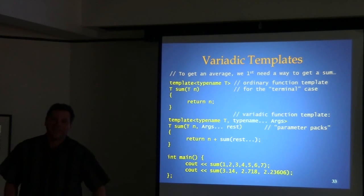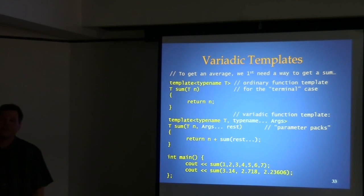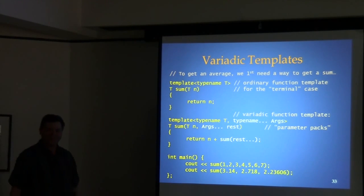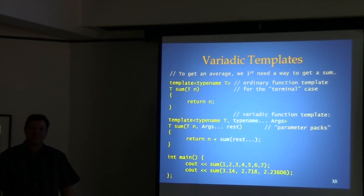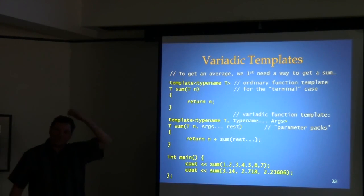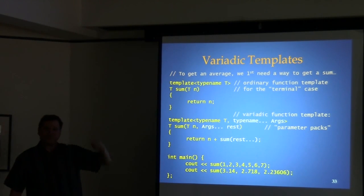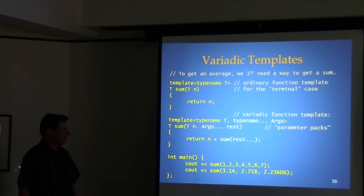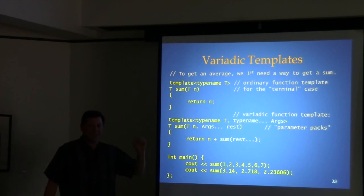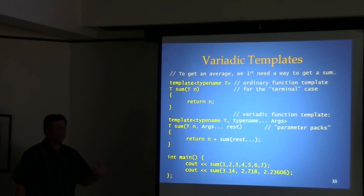All this recursion happens at compile time. The actual generated code just loads a register with the sum of those numbers — it's never actually doing addition at runtime. Question: can they be different types? Yes, they can, but there's a catch — we need a couple more slides to deal with that.